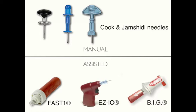After the insertion site has been identified, we move on to needle insertion. IO devices can be divided into manual and assisted. There is a variety of manual needles — usually named after their inventors — that rely solely on the power of your muscles to penetrate the bone. Power-assisted devices, which are responsible for the popularization of IO access, facilitate this process. Three assisted devices are shown: the FAST device, used to access the sternum and not described in this lecture, and the EZ-IO and BIG, which will be demonstrated later.